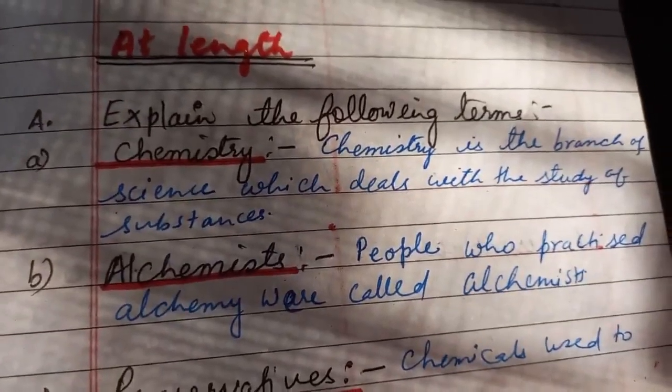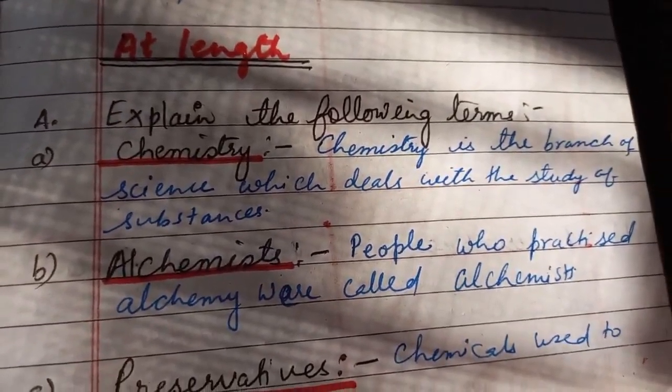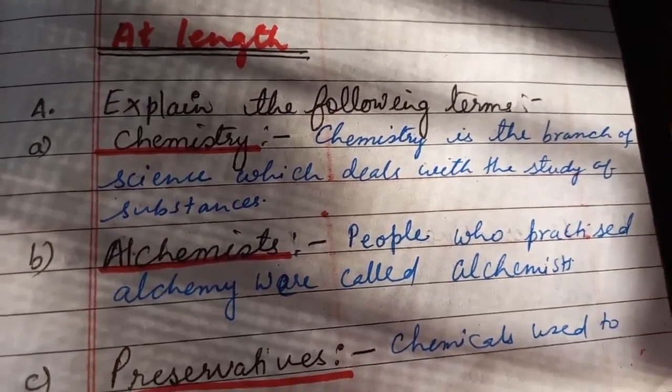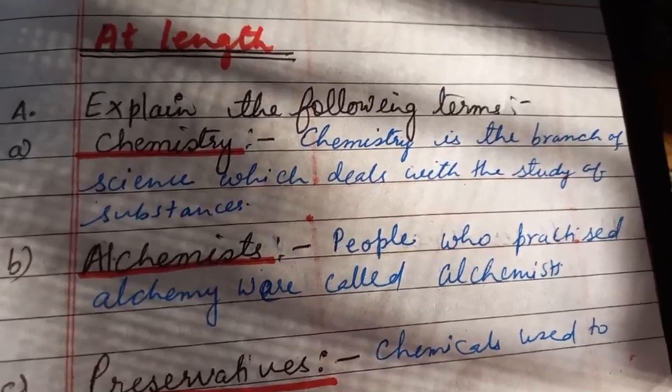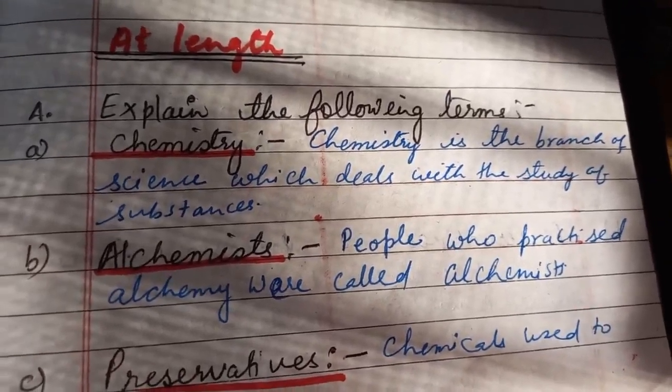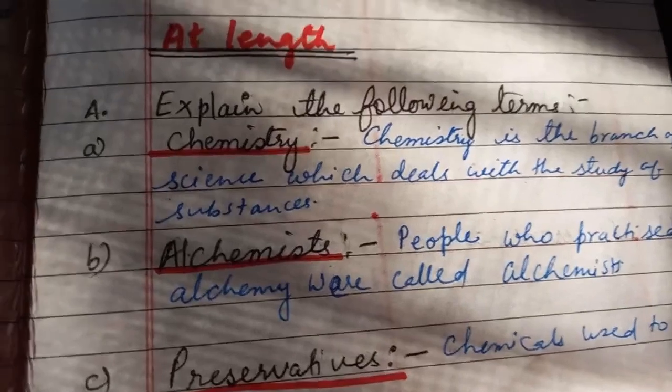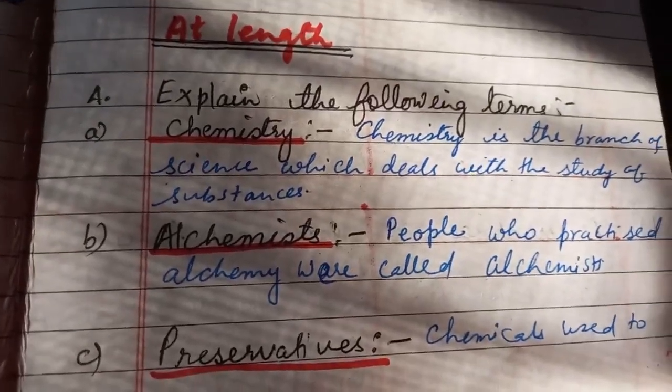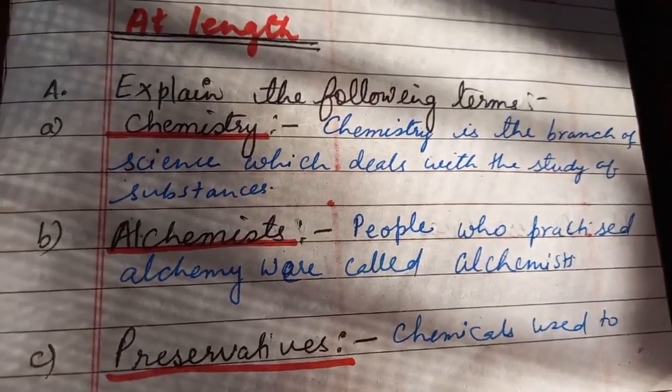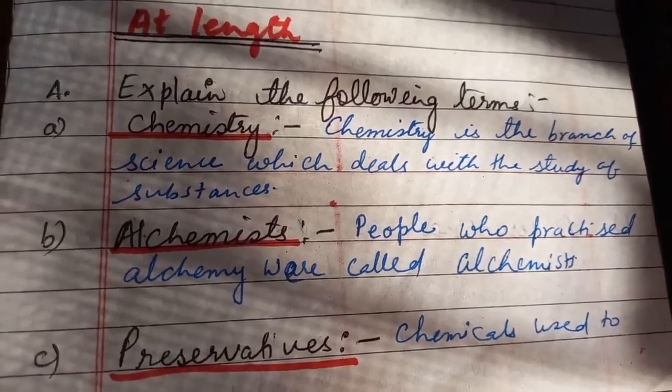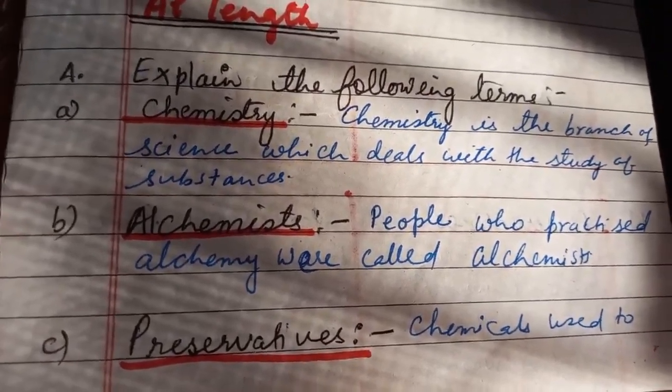Then at length question, question number A: Explain the following terms. A number chemistry. You will write: chemistry is the branch of science which deals with the study of substances. Second number alchemists: people who practiced alchemy were called alchemists.